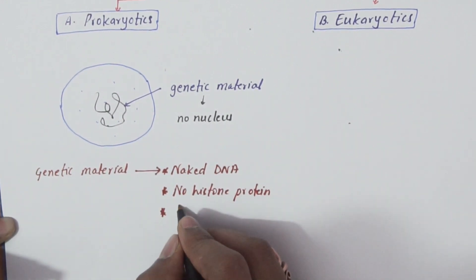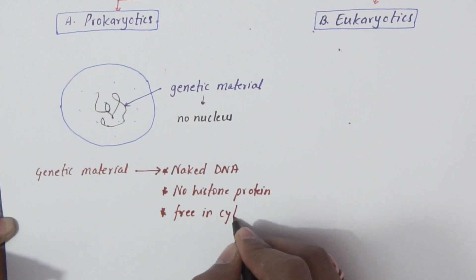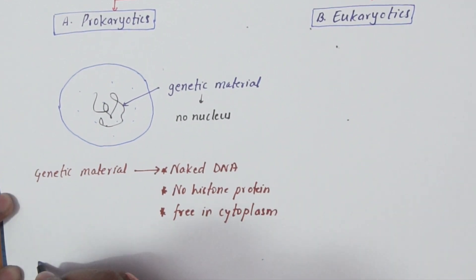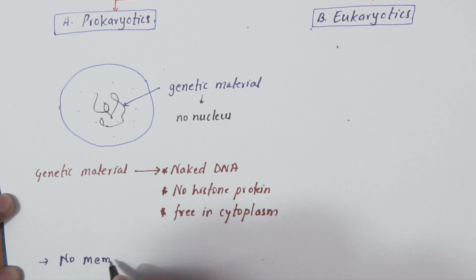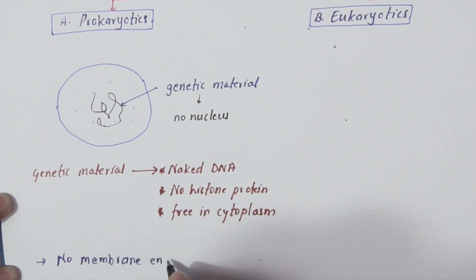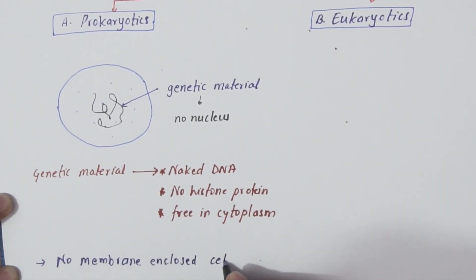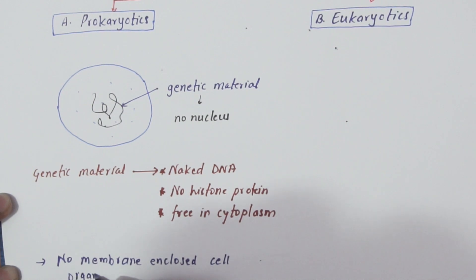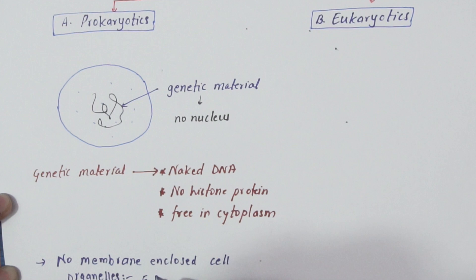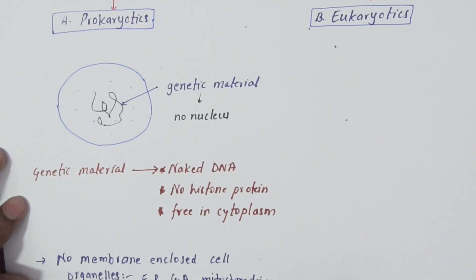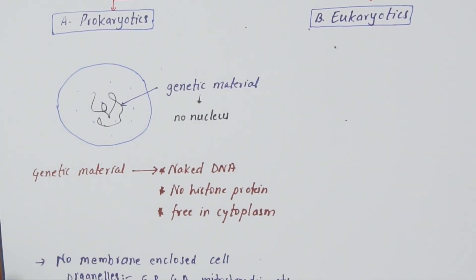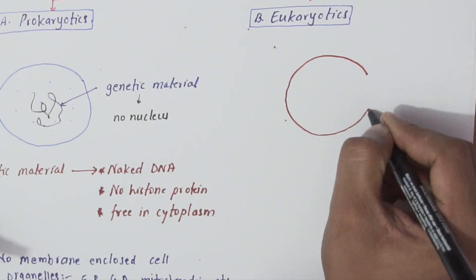Moreover, prokaryotic cells do not have important membrane-enclosed cell organelles such as mitochondria, endoplasmic reticulum, Golgi apparatus, lysosomes, etc. Examples include bacteria and cyanobacteria.